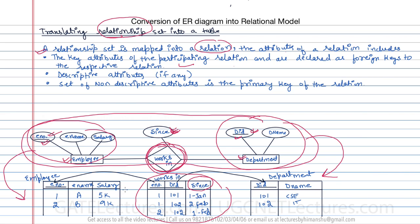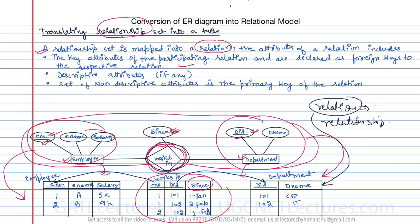Note: 'relation' and 'relationship' are different terms. A relationship is like 'Works In' in the ER model, while a relation is the table in the relational model. Relation is the formal term; table is the informal term used in the relational model.